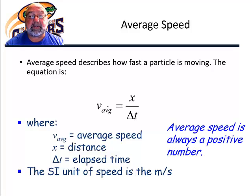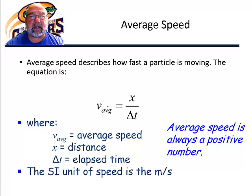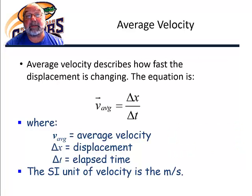Average speed is always a positive number — it's the amount of the velocity. If we're talking about an instantaneous velocity, a velocity at a very, very small time interval. I guess we should probably learn what velocity is, since I've already mentioned it.